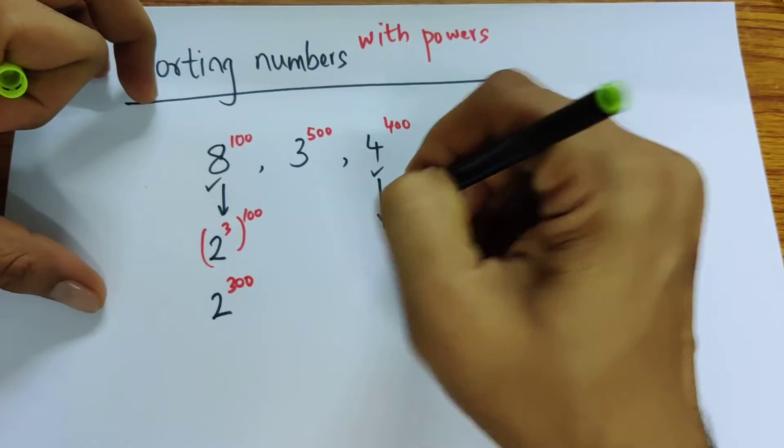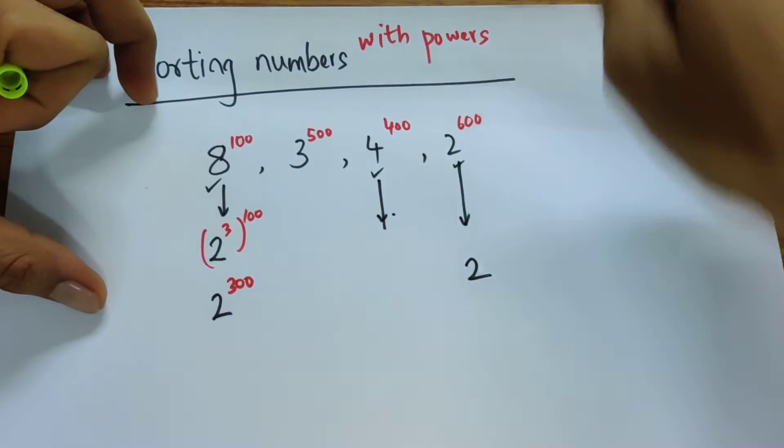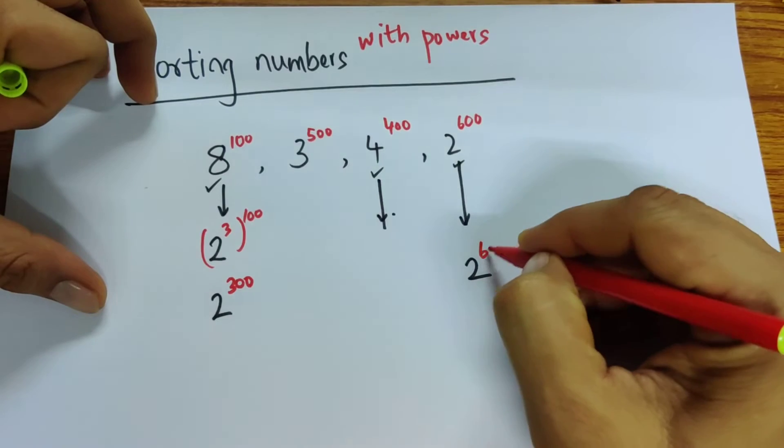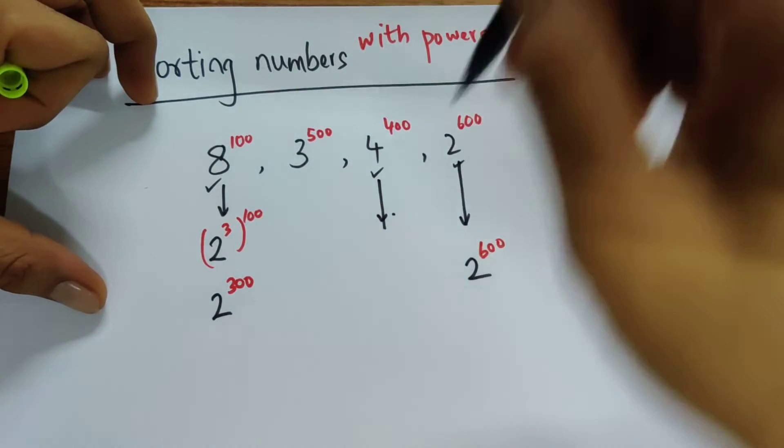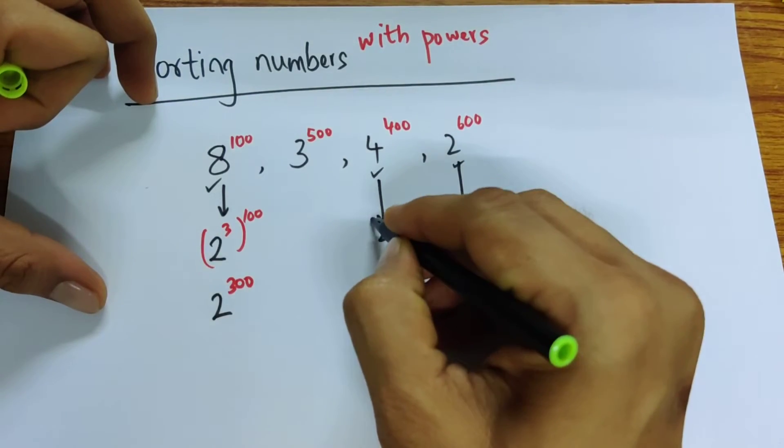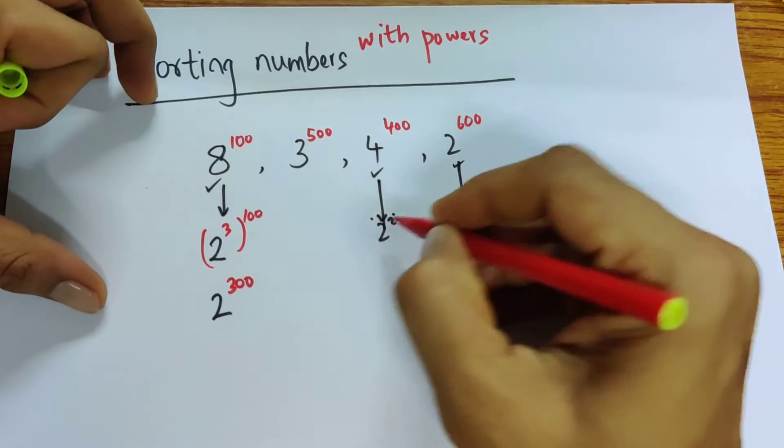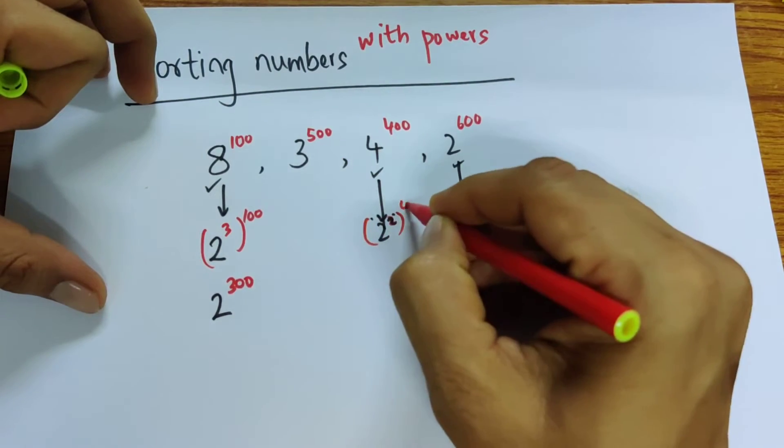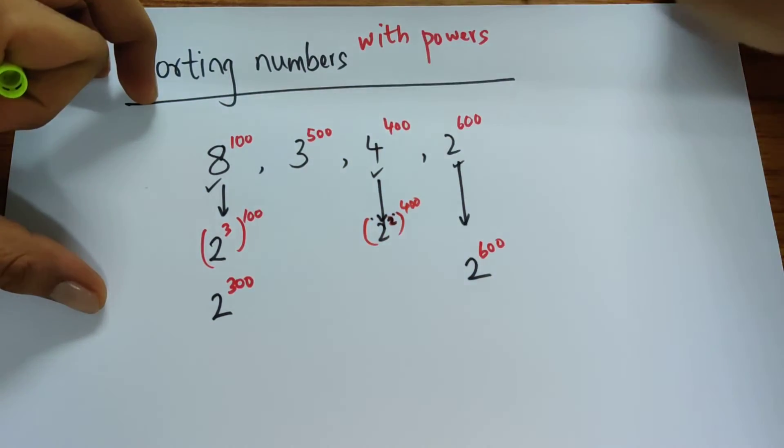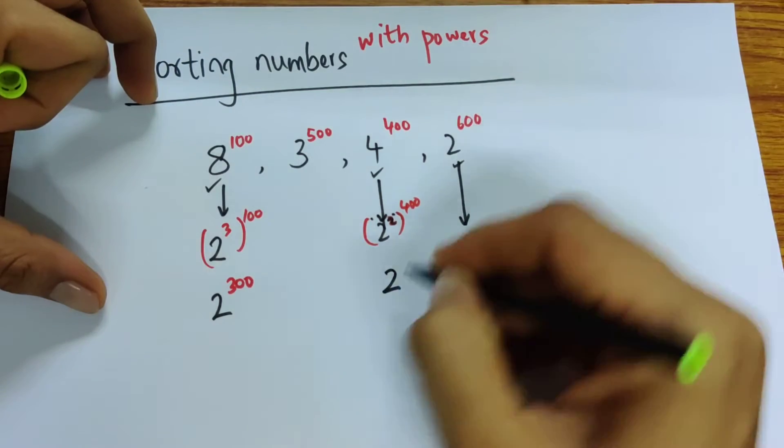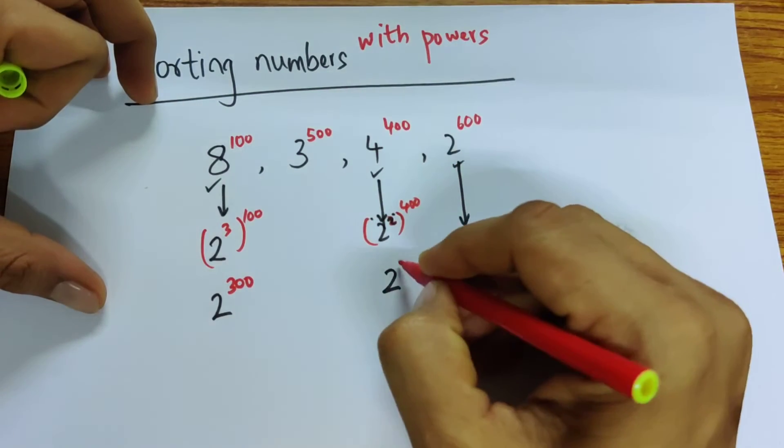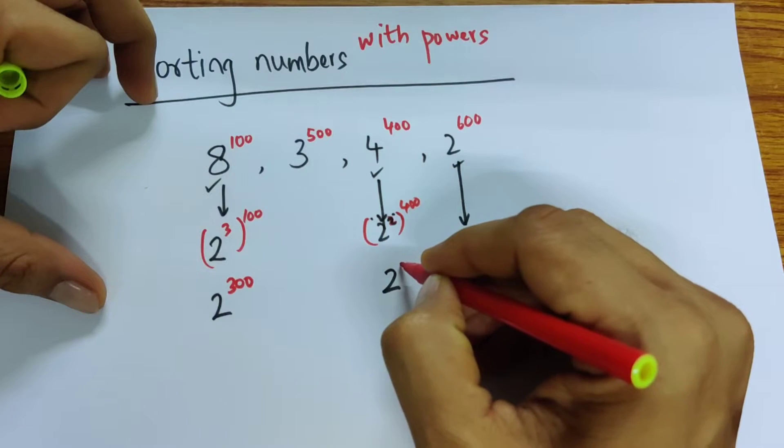This one is also straightforward. It's just 2 to the power of 600 and we're done. And this is 2 squared, so we have 2 squared raised to the power of 400. That's 2 to the power of 2 times 400, which is 800.